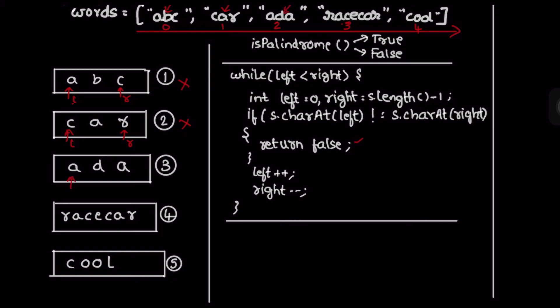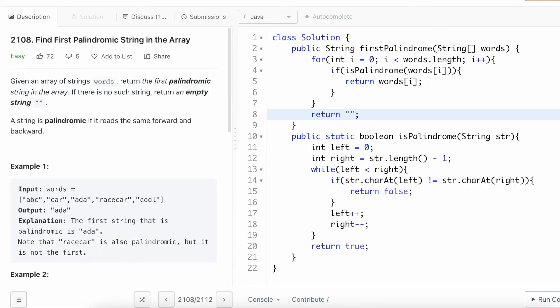Moving to the next word 'ada': left and right both point at 'a', and since both letters are the same, left is incremented and right is decremented. Now both pointers are at the middle letter 'd'. The while loop terminates because left is no longer less than right — they point at the same position. So the function returns true, meaning 'ada' is a palindrome. It is the first palindromic word, so it is returned as the output. There's no need to check the remaining words. That's the end of the program — thank you for watching and I'll see you in the next one.